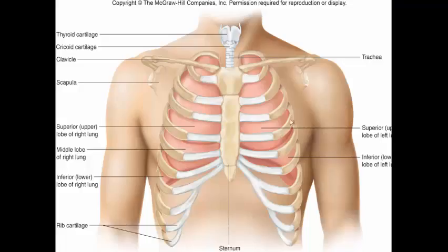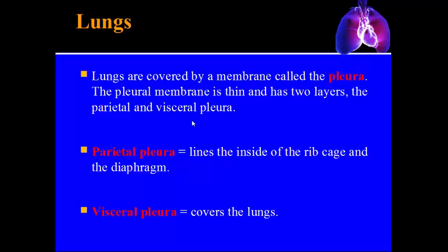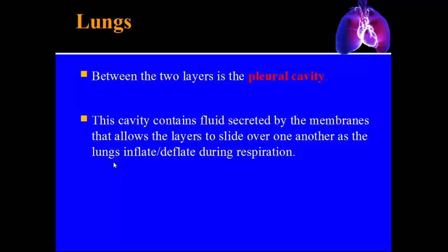Here's an image of both lungs inside the thoracic cage with the trachea and Adam's apple visible. The lungs are covered by a membrane called the pleura, which has two layers: the parietal pleura, lining the inside of the ribcage and contacting the diaphragm, and the visceral pleura, covering the lungs directly. Visceral always means contacting an organ directly; parietal means lining a cavity.